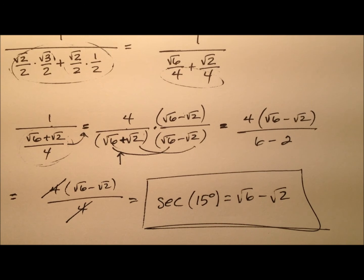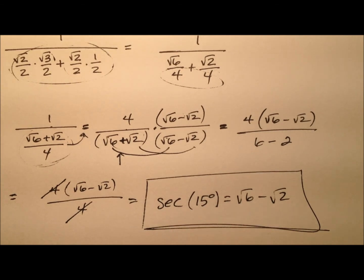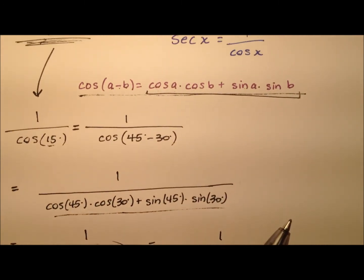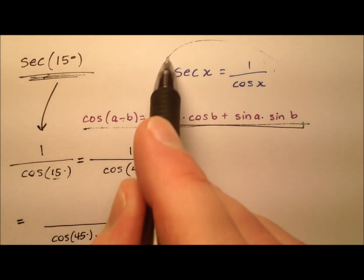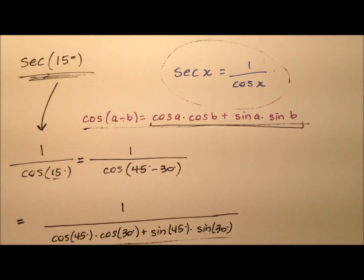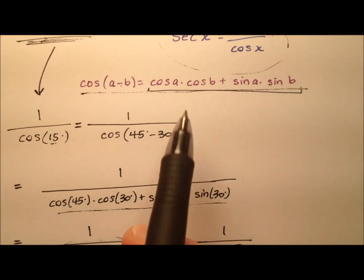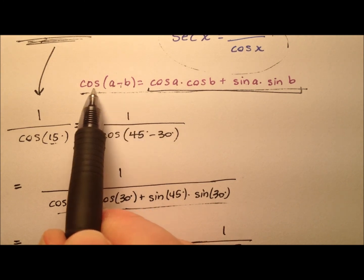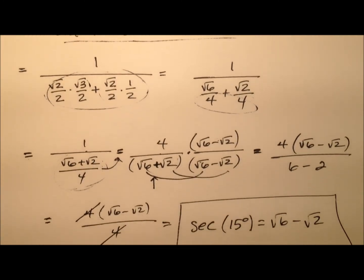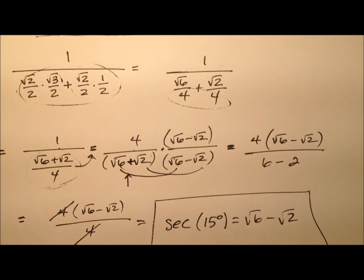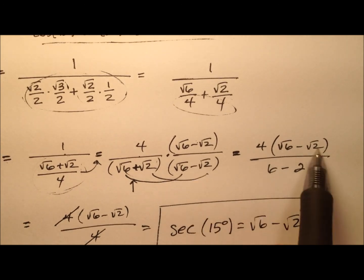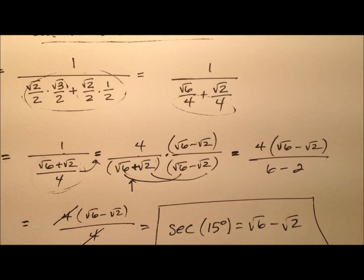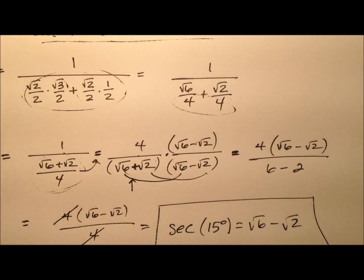So here we have the exact value for the secant of 15 degrees. We found that value by using the reciprocal relationship, the difference identity for cosine, and then rationalizing the denominator. Our exact value for the secant of 15 degrees is √6 − √2.